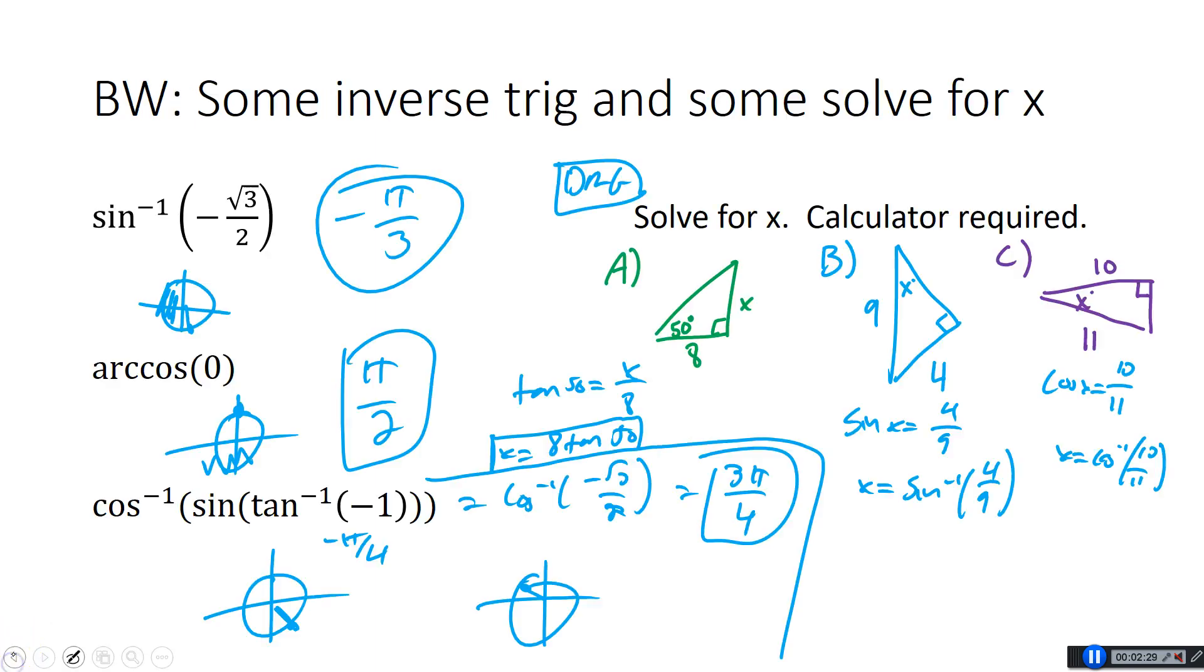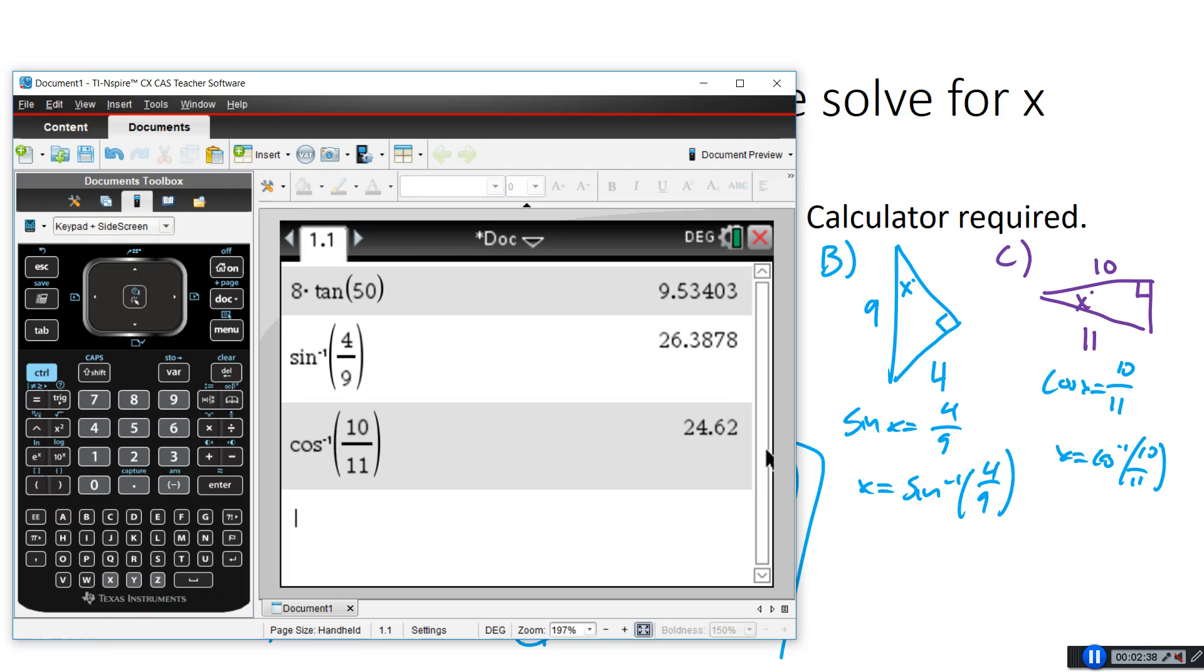Over here, I'm going to have cosine x equals 10 elevenths, adjacent over hypotenuse. So then x is going to be cosine inverse of 10 elevenths. There we go. Oh my goodness. Way too far ahead. Okay. So cosine inverse of 10 elevenths for that last one. Let's take a look at a few of these problems. Just see how we did. There we go. My calculator.